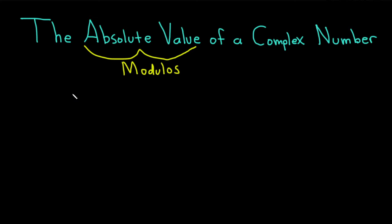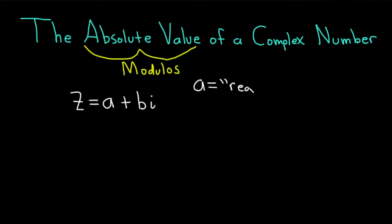By a complex number, I mean a number which I'll call z, which is equal to a plus bi. A here has a name — a is called the real part of the complex number. If you want to see some fancy notation, you could say the real part of z is equal to a. This is notation you often see when you study complex variables, which is the study of complex-valued functions and the calculus associated with them.